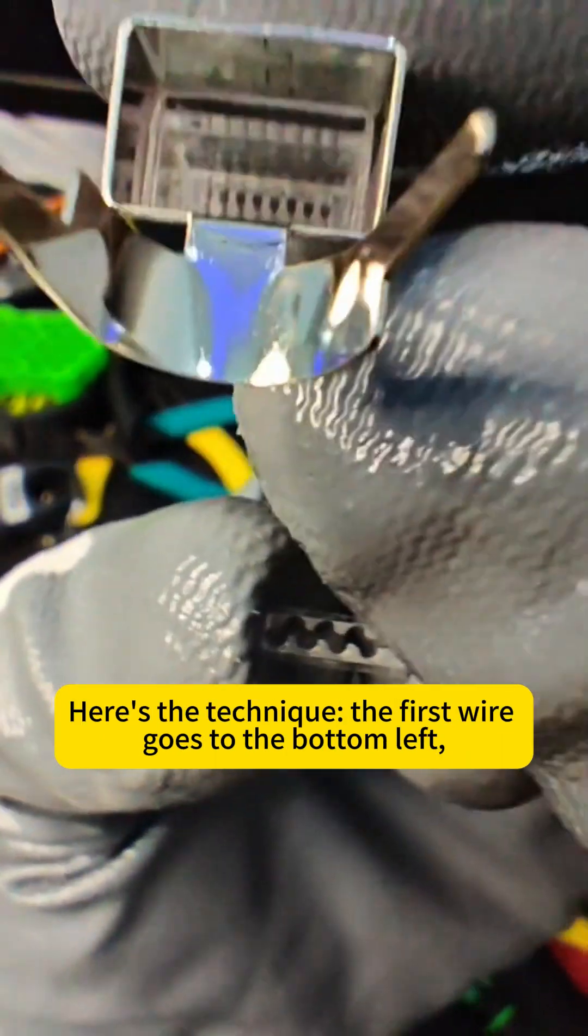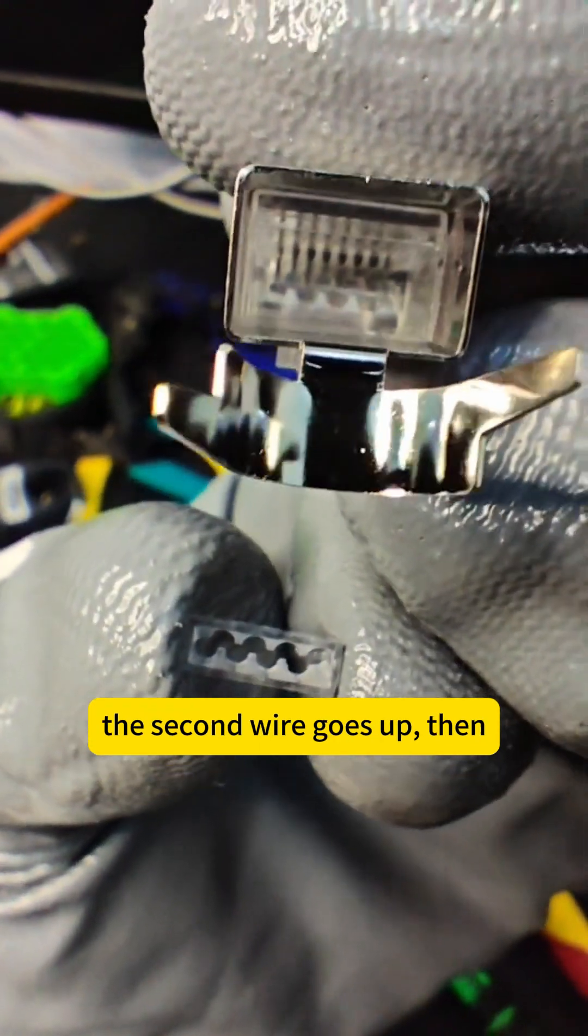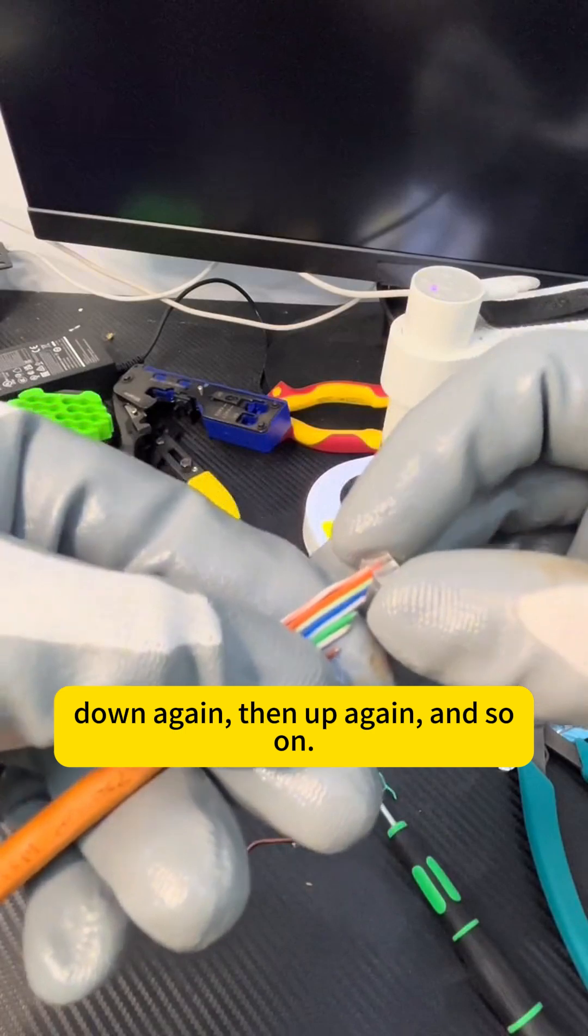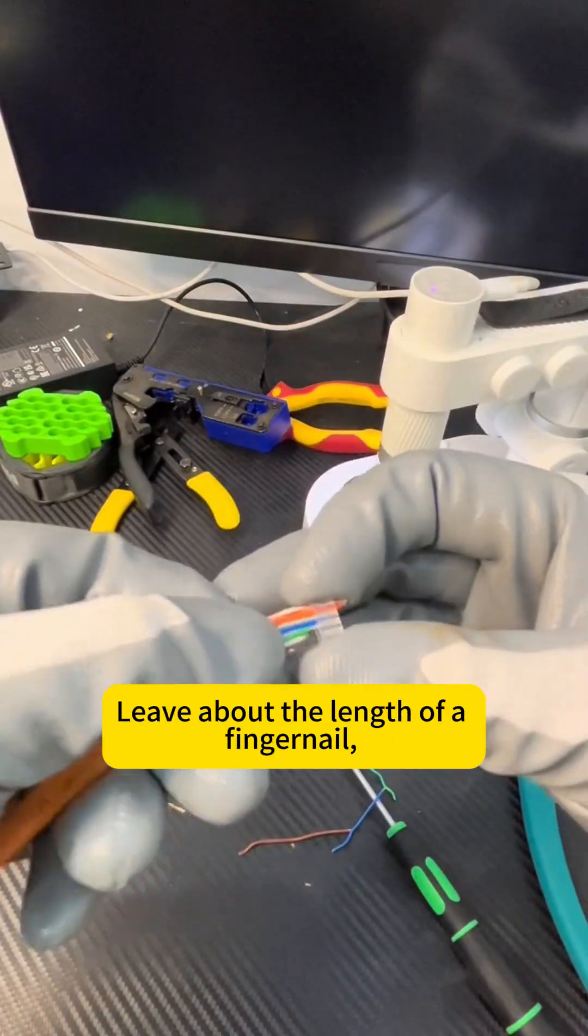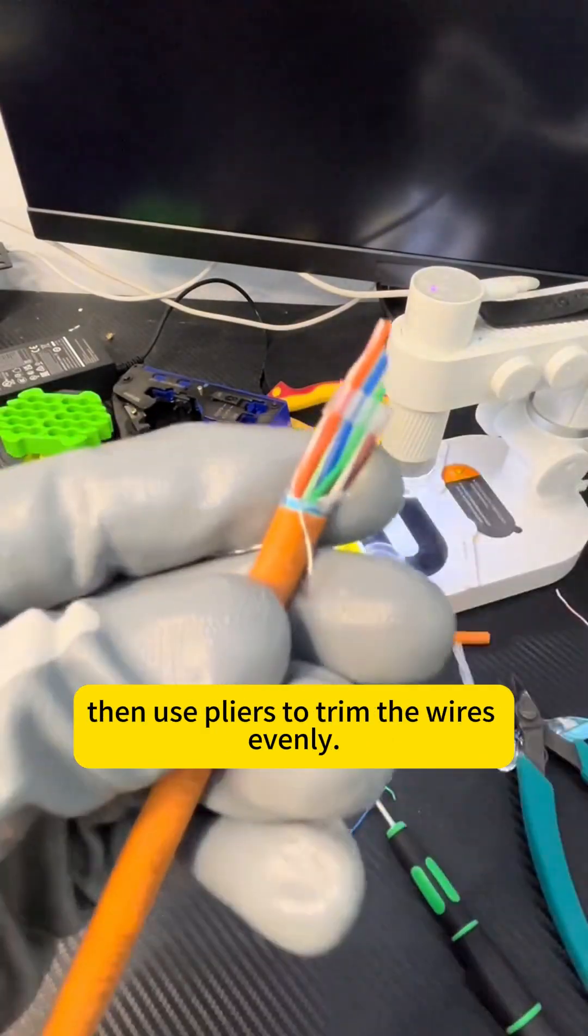Here's the technique. The first wire goes to the bottom left, the second wire goes up, then down again, then up again, and so on. It's kind of like navigating a wooden puzzle map. Leave about the length of a fingernail, then use pliers to trim the wires evenly.